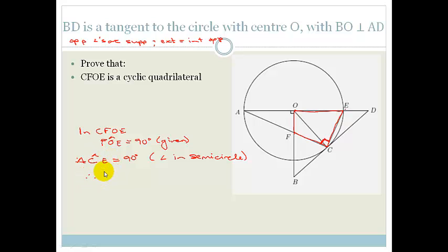Therefore, we know that CFOE is a cyclic quad. And why? Because opposite angles are supplementary. Because 90 plus 90 equals 180. Awesome. So we've just proven that. Let's see what else we have to prove.